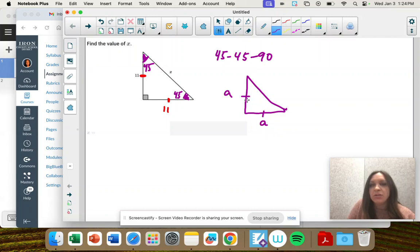Then the hypotenuse, the one across from the right angle, is going to be whatever that value is, times the square root of 2.